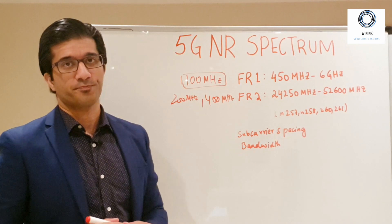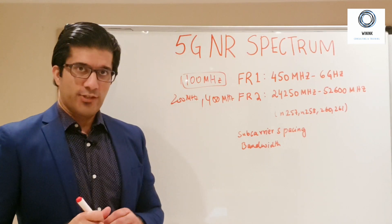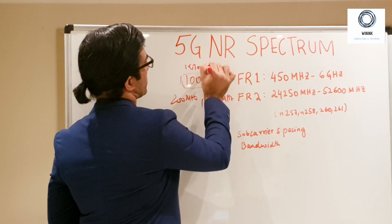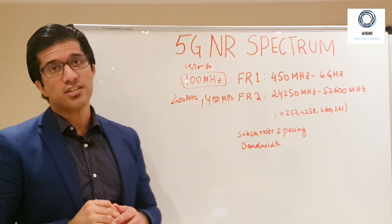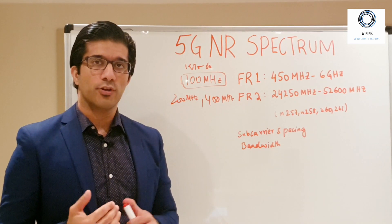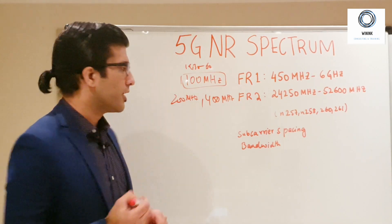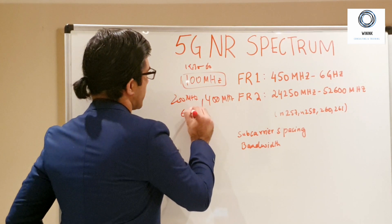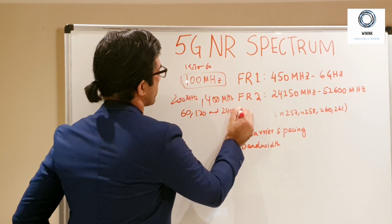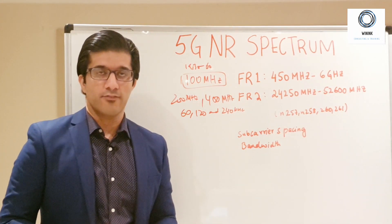For subcarrier spacing, in the FR1 range we have 15 kHz, 30 kHz, and in some cases 60 kHz. For FR2, since it involves very high frequency communication, you need to compensate for coherence time, bandwidth, and the Doppler effect. So FR2 supports subcarrier spacing of 60 kHz, 120 kHz, and up to 240 kHz.